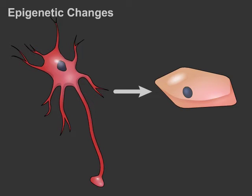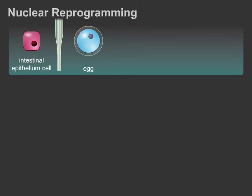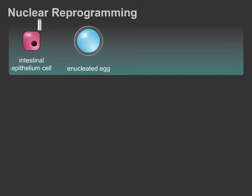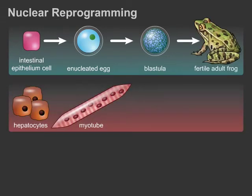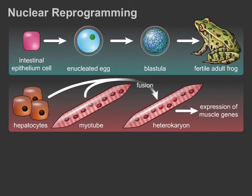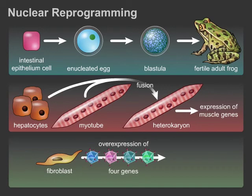Can a differentiated cell be redirected to express genes that characterize another cell type? Experimental procedures have been identified that allow certain cell types to take on the nuclear gene expression patterns of other cell types. The first cloning experiments in the frog model determined that nuclei from intestinal epithelium stem cells can be reversed to a totipotent state when transferred to enucleated frog eggs. More recent experiments have shown that liver cell nuclei can express previously silenced muscle genes when fused with multinucleate muscle fibers, and that overexpression of specific genes in skin cells can lead to the behavior and global gene expression of pluripotent stem cells.